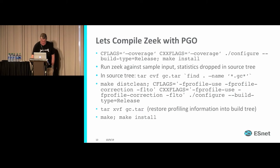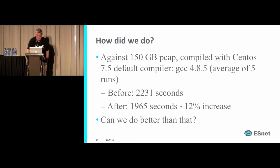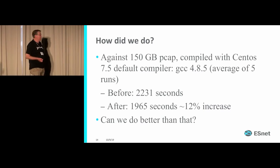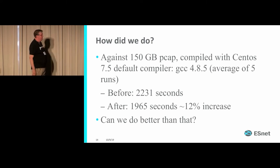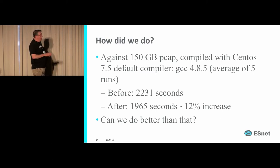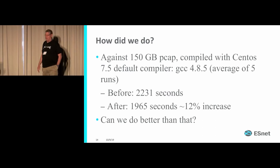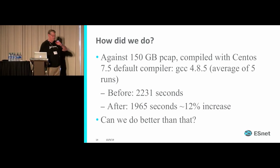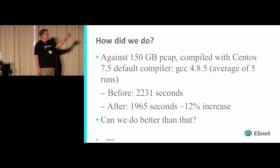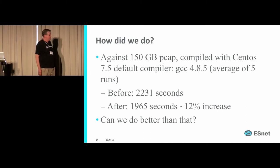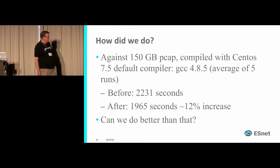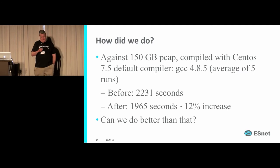Let's see how we did. I used a 150-gigabyte PCAP on a system with CentOS 7.5; the default compiler is GCC 4.8.5. Running just the straight local.zeek with no modifications whatsoever — out of the box. Before using profile-guided optimization we got 2231 seconds, and after we're down to 1965 — a 12% increase. That's starting to look okay already.